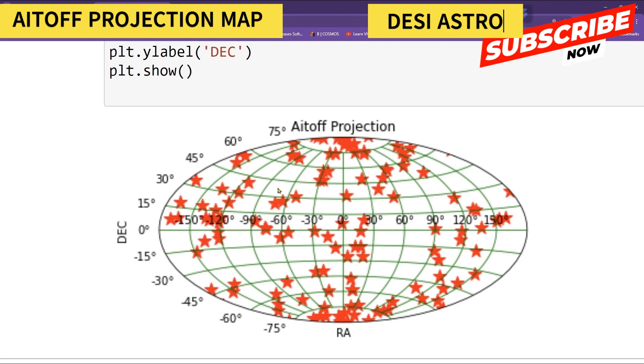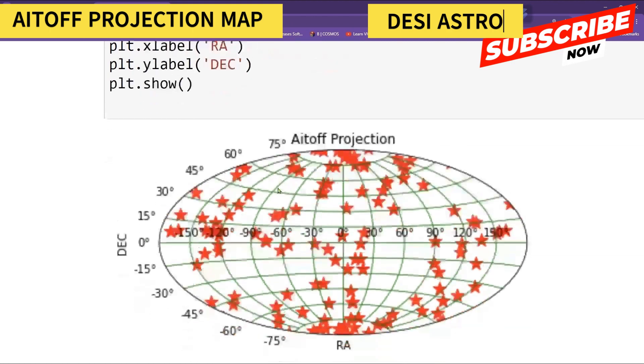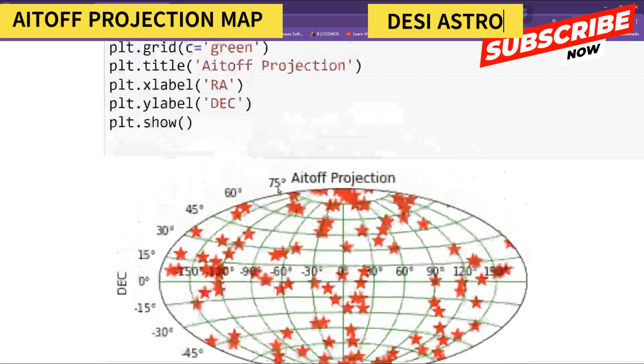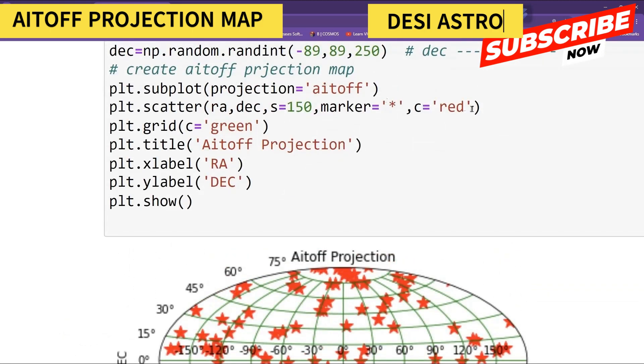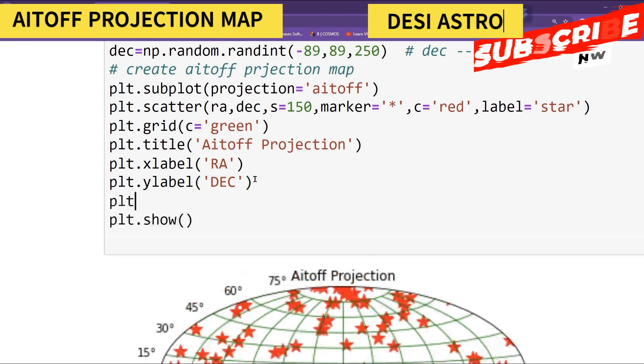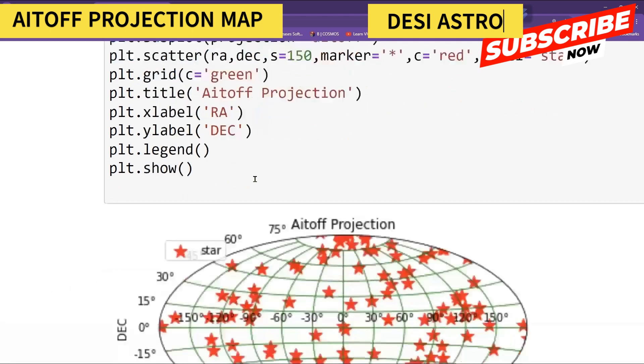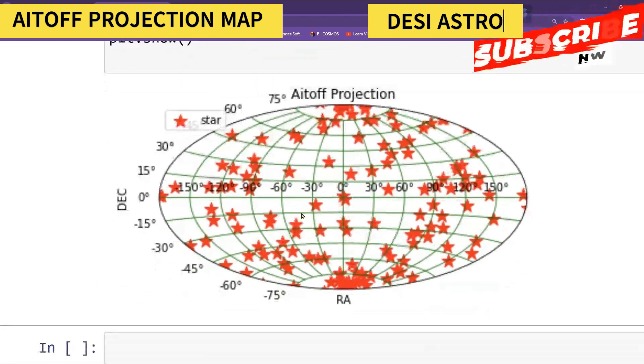It has longitude and latitude both map corresponding to your RA and DEC, right? Can also give label if you want. So label you can give, say, star. And plt.legend. So it will show that these are the stars in this projection, right?